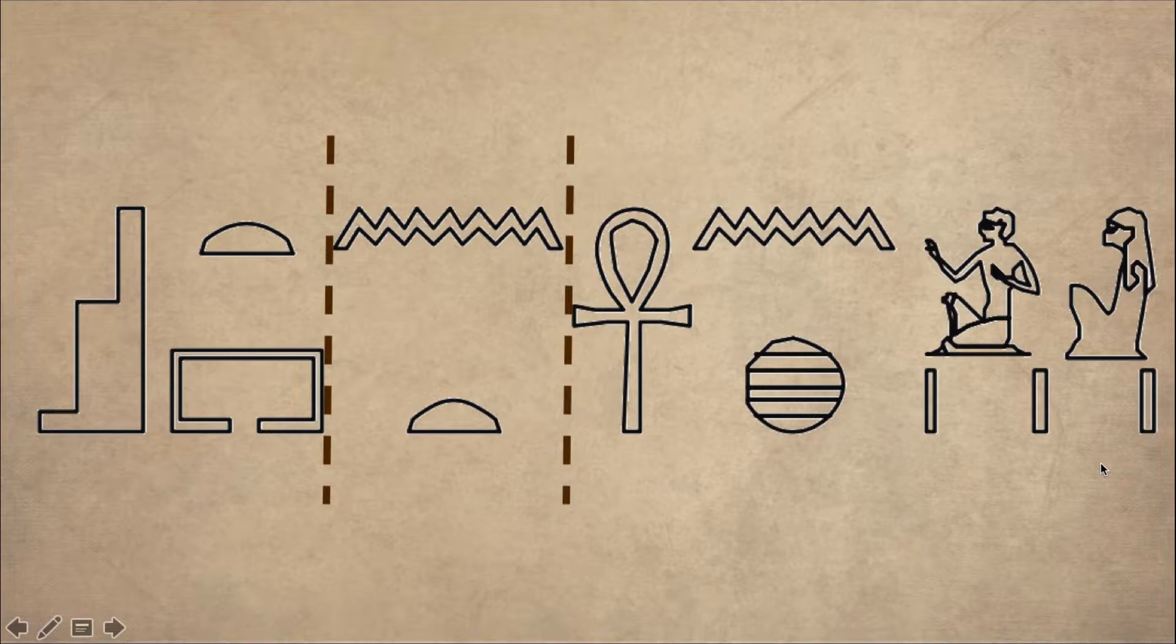Set, net, ankhou. And set net ankhou means place of the living.